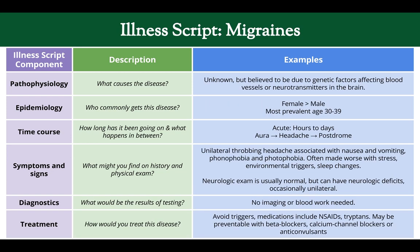Let's look at one example — an illness script constructed for migraines. The pathophysiology: we're not really sure how it works, but we think there are some genetic factors at play, as well as blood vessels in the brain. Who gets the disease? It's usually women more than men, usually in their 30s. The time course: it starts over the course of hours to days. The pattern is that patients usually start with an aura — they can tell when they're about to get the headache — then they get the headache, and then as it goes away, they have another sensation. Symptoms on history include a unilateral, one-sided throbbing headache, nausea and vomiting, worsening with loud sounds and bright lights. On physical exam, the neurologic exam is usually normal.